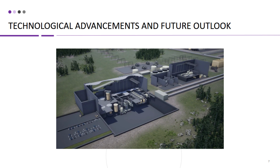As technology continues to evolve, there are potential advancements that could impact the life cycle of nuclear power plants. Advanced reactor designs, improved safety features, and more efficient waste management techniques are being researched and developed to further enhance the safety and sustainability of nuclear power. Advanced reactors, such as small modular reactors (SMRs) and Generation 4 reactors, offer potential benefits in terms of safety, efficiency, and waste reduction. These advancements could impact the construction, operation, and decommissioning phases, leading to more efficient and environmentally friendly practices.